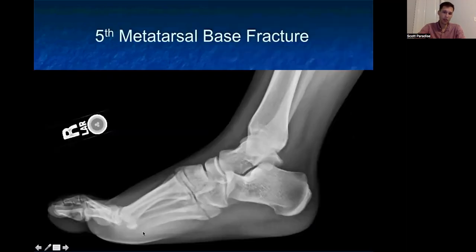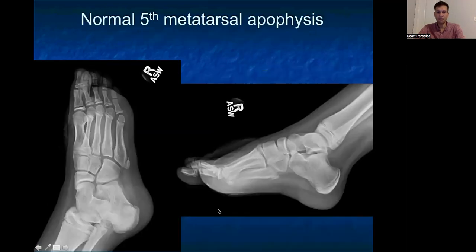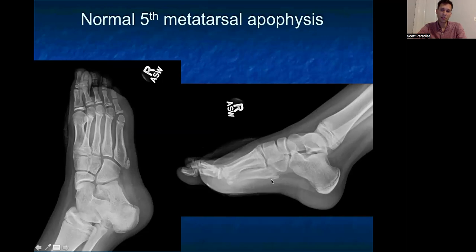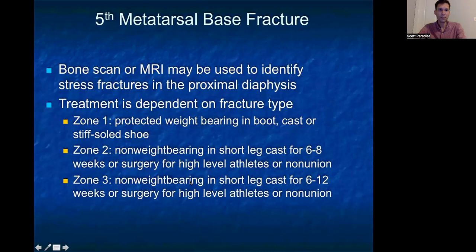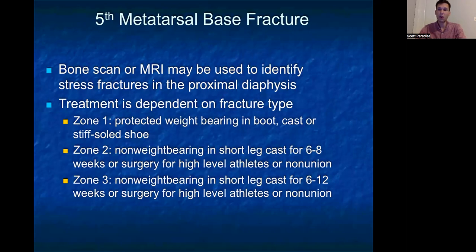On the lateral view we can also see that fifth metatarsal, which sits a little lower and comes into view nicely. Of course we're talking about adult fractures today, but don't forget that in adolescents and children they have a normal apophysis here, which should not be mistaken for a fracture. If there is any concern and you're not sure with radiographs, bone scan or MRI can help. Treatment is largely dependent on the fracture type — whether it's zone one, two, or three determines our method of treatment.